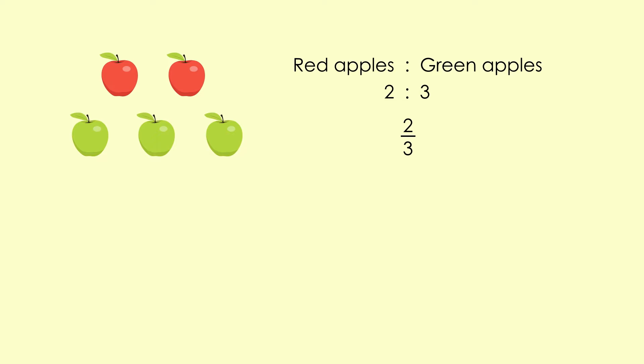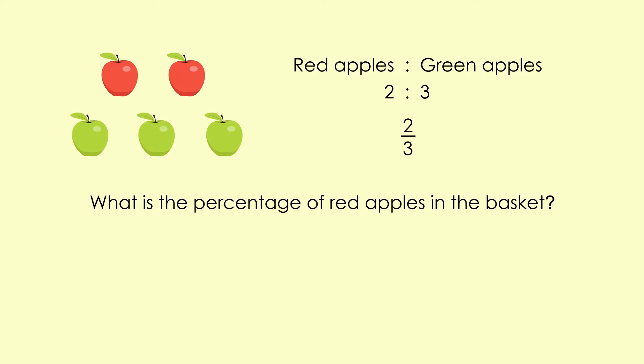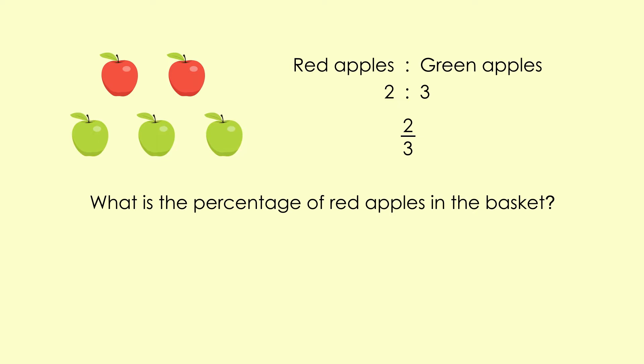Now, what is the percentage of red apples in the basket? How do we calculate the percentage? Here are two red apples from a total of five apples. Thus, we can write the ratio between red apples and the total fruits as two to five, which can also be written in fractional form as two over five. The fraction can be expressed in terms of percentage by multiplying the fraction with 100%, and you will get 40%.